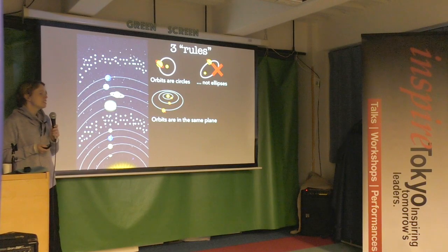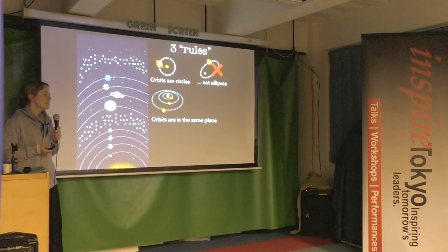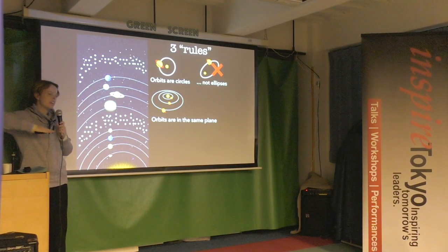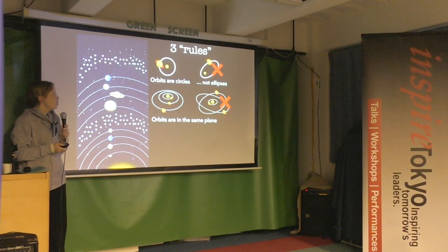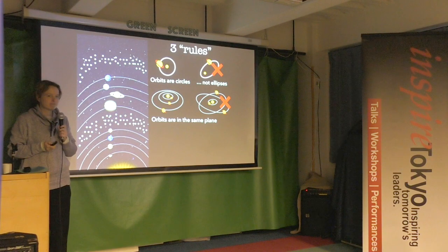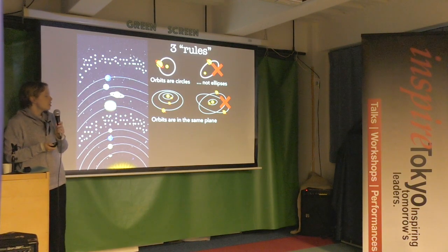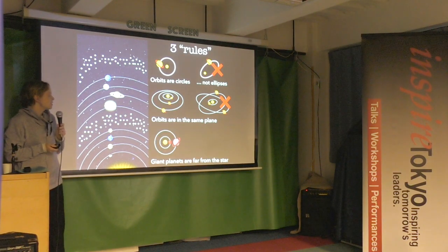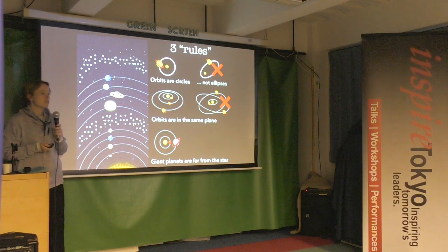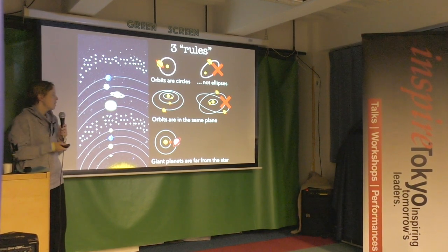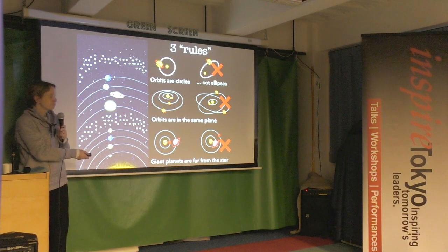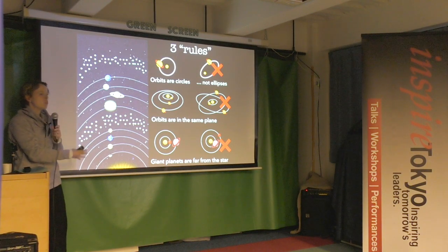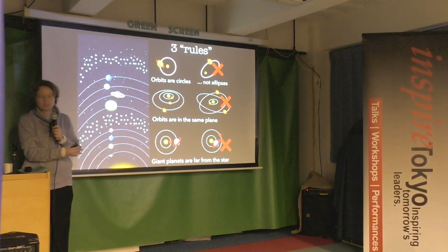The second rule is that orbits are in the same plane — they all orbit in the same disc-shaped region of space as opposed to random angles everywhere. The third rule is that gas giants are further from the star than the rocky planets. This seems to be what our solar system tells us are the rules for planet formation.